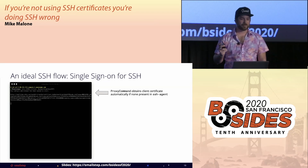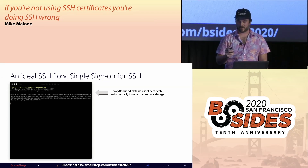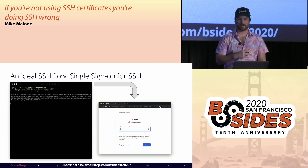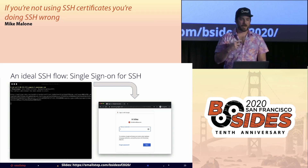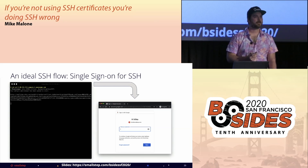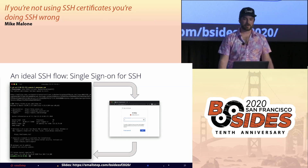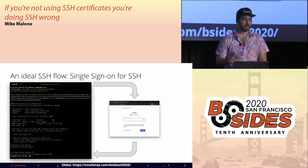If not, a browser tab is opened and a single sign-on flow is initiated with your identity provider. Users log in with a familiar web-based SSO flow, making it easy to leverage strong MFA and other advanced authentication capabilities. Adding and removing a user from your canonical identity provider also adds and removes SSH access. Once logged in, a new key pair is generated and they get a certificate from the CA using the SSO assertion. The certificate is added to SSH agent and the connection proceeds normally.